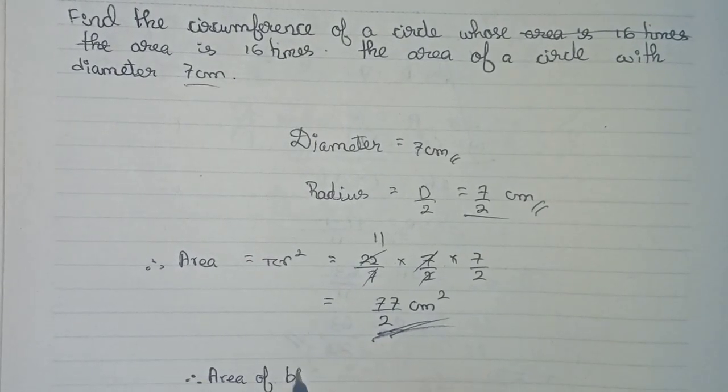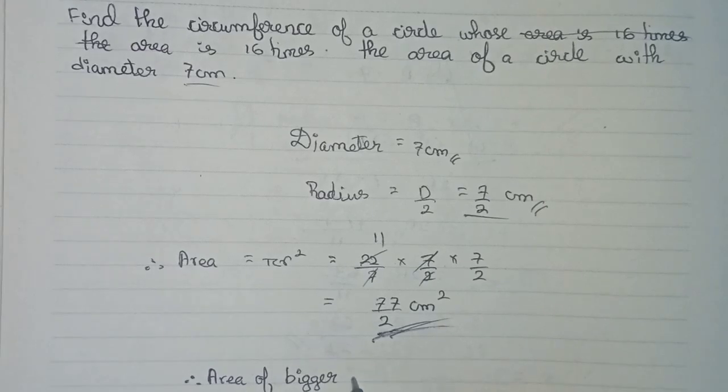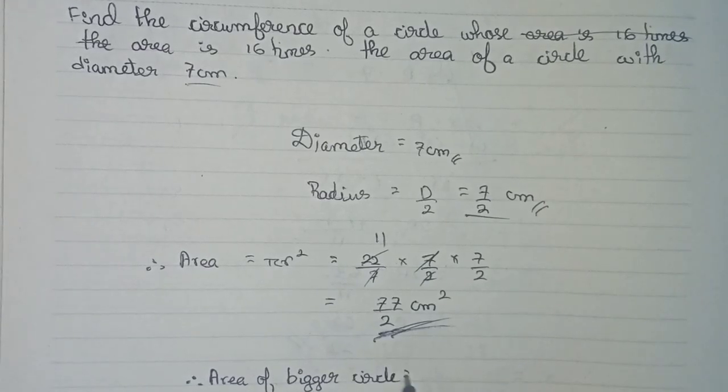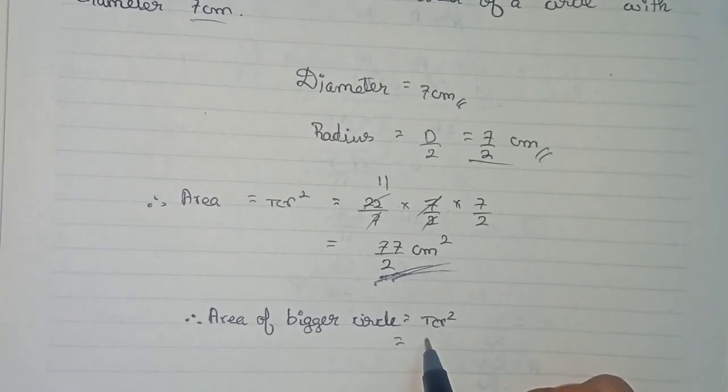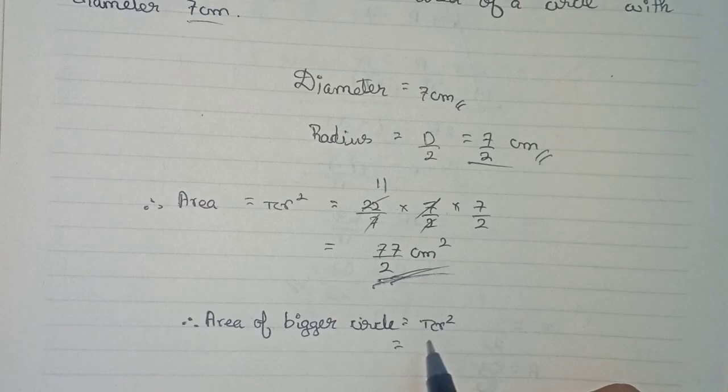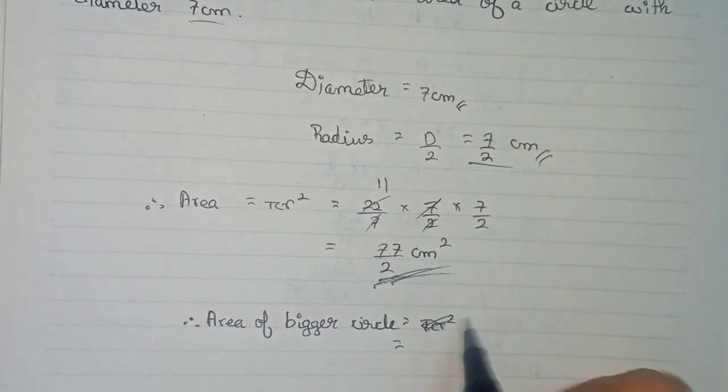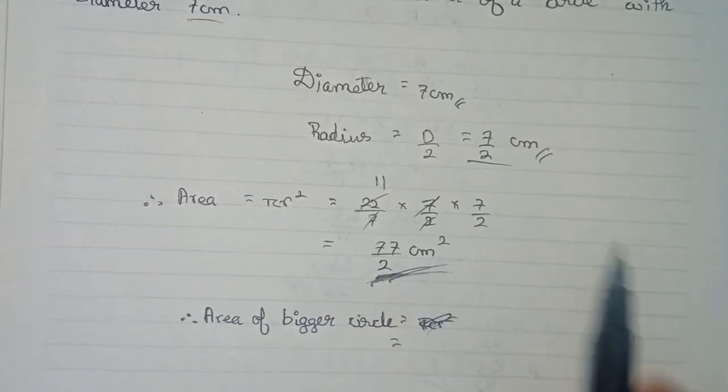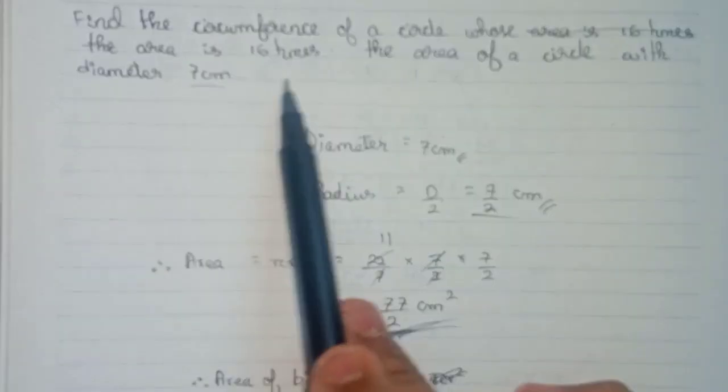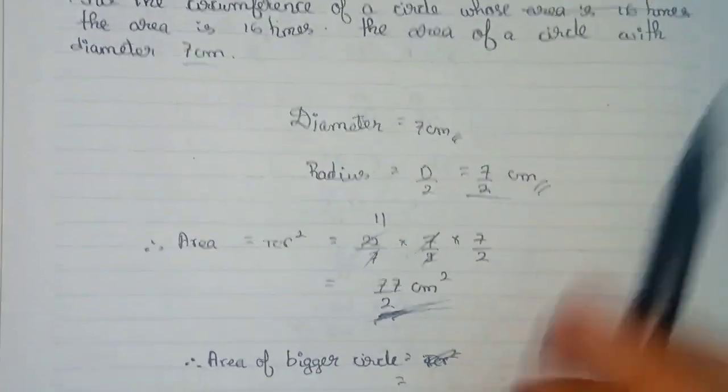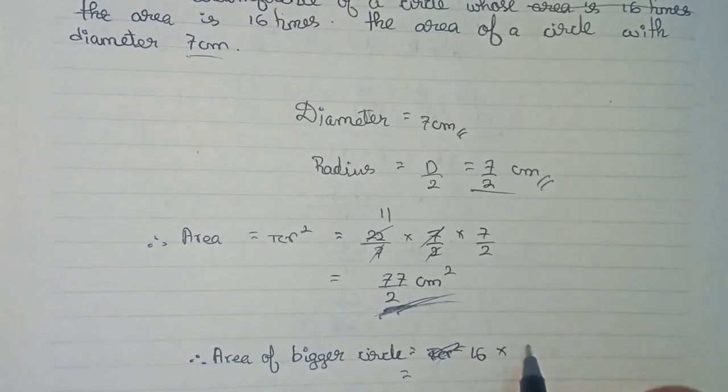Area of bigger circle: same formula pi r square, but here we don't need this formula as we have already found the area. We just need to multiply it with 16 as it is given 16 times greater than the area, so just 16 to 77 by 2.